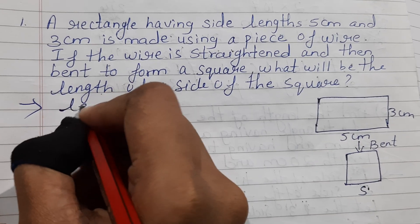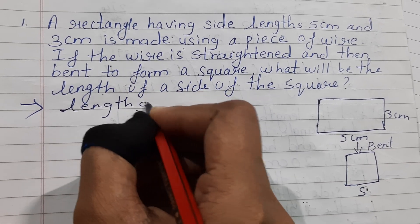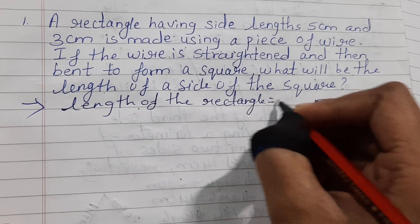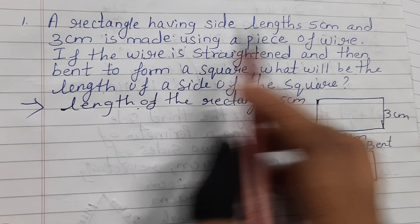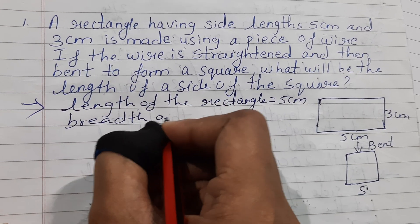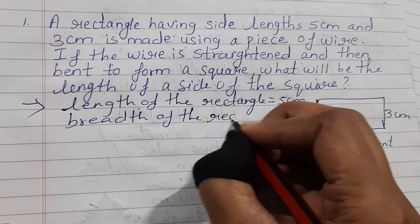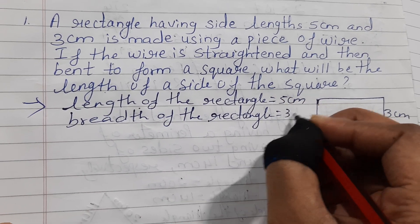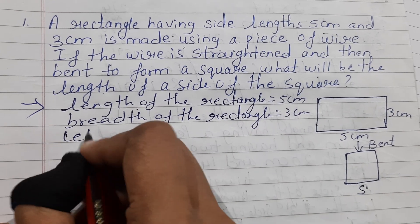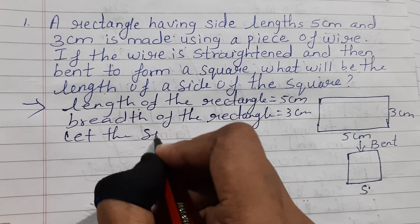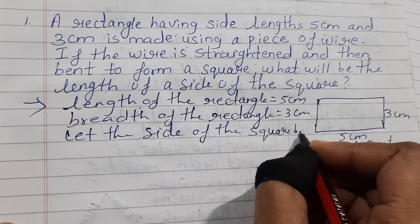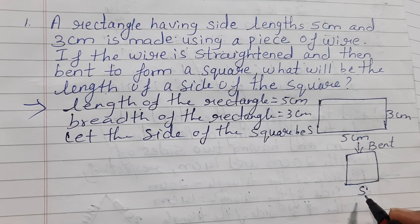First, what you will have to write down is the length of the rectangle. Length of the rectangle is equal to 5 cm, and the breadth of the rectangle will be 3 cm. Now let the side of the square be x.